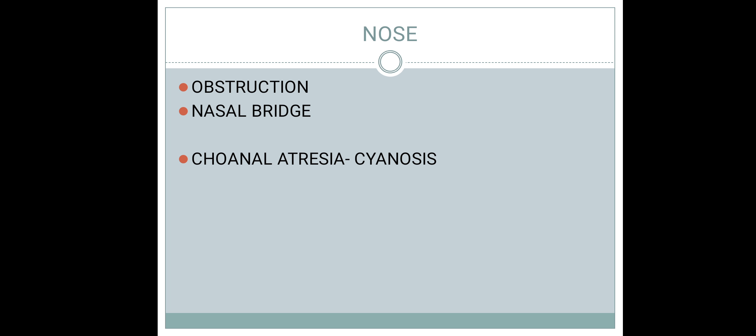If the baby has cyclical cyanosis, examine for choanal atresia and immediately perform surgery to relieve the obstruction. Also examine the nasal bridge — a depressed nasal bridge can be seen in Down syndrome, and the nasal bone is affected in congenital syphilis. Mucus and other obstructions can be easily removed by suctioning.